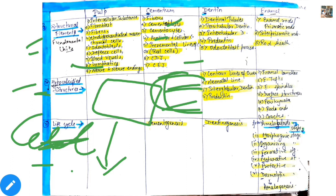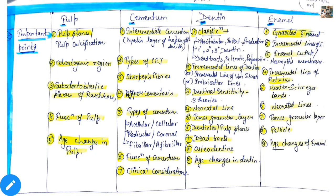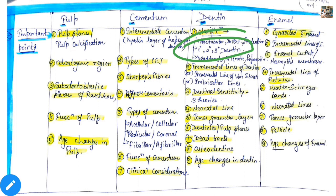Then we will study about the life cycle — how does dentine form? That life cycle is called dentinogenesis. And last we have important points which can be direct short questions of 5 marks. For example, define and classify dentine. First you will write the definition and then classify it. The classification — mostly primary, secondary and tertiary dentine. Next is the incremental lines of dentine, also called incremental lines of von Ebner or imbrication lines. All three terminologies are the same.